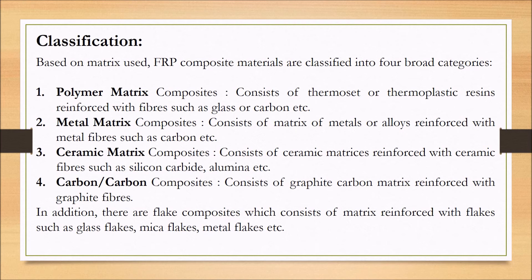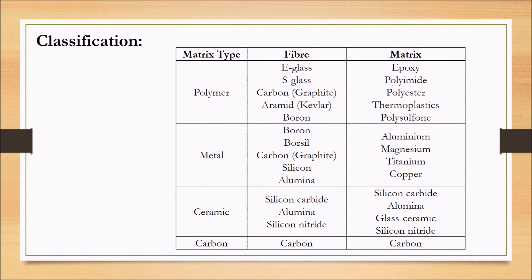An example of carbon fiber material is graphite. In addition to these four categories, there are also flake composites, which consist of a matrix reinforced with flakes such as glass flakes, mica flakes, metal flakes, etc. The combination of matrix and fiber selection is based on the requirement of strength and other mechanical properties.